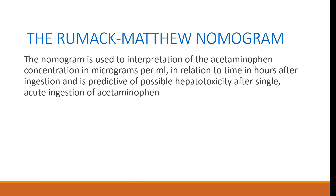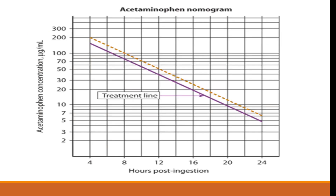Here we have the Rumack-Matthew nomogram. This nomogram is used to interpret acetaminophen concentration in micrograms per milliliter in relation to time in hours after ingestion, and is predictive of possible hepatotoxicity after a single acute ingestion of acetaminophen. On the left axis we have acetaminophen concentration, and on the bottom axis we have time in hours. There are two lines: the purple one shows therapeutic concentration, while the yellow one shows excessive intake causing poisoning.